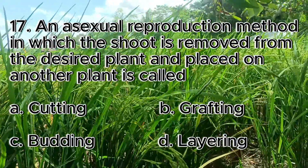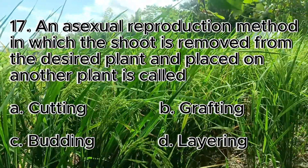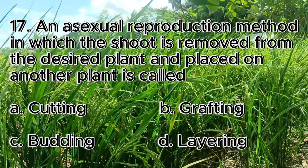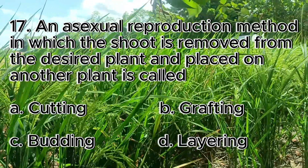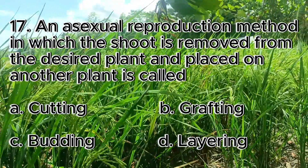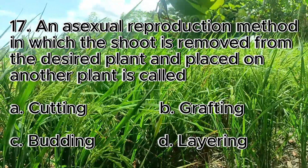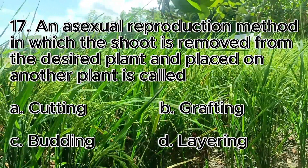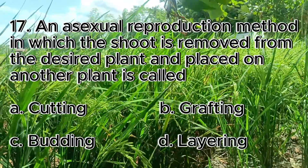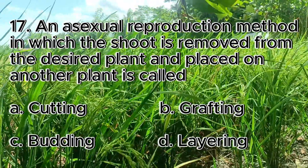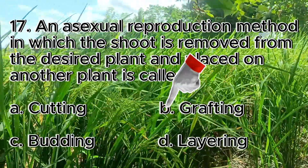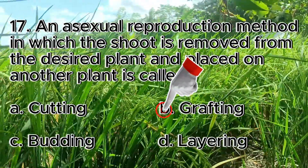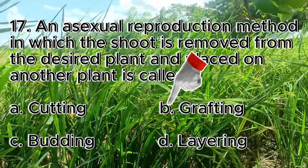Number 17. An asexual reproduction method in which the shoot is removed from the desired plant and placed on another plant is called. A. Cutting, B. Grafting, C. Budding, D. Layering. The answer is letter B, grafting.